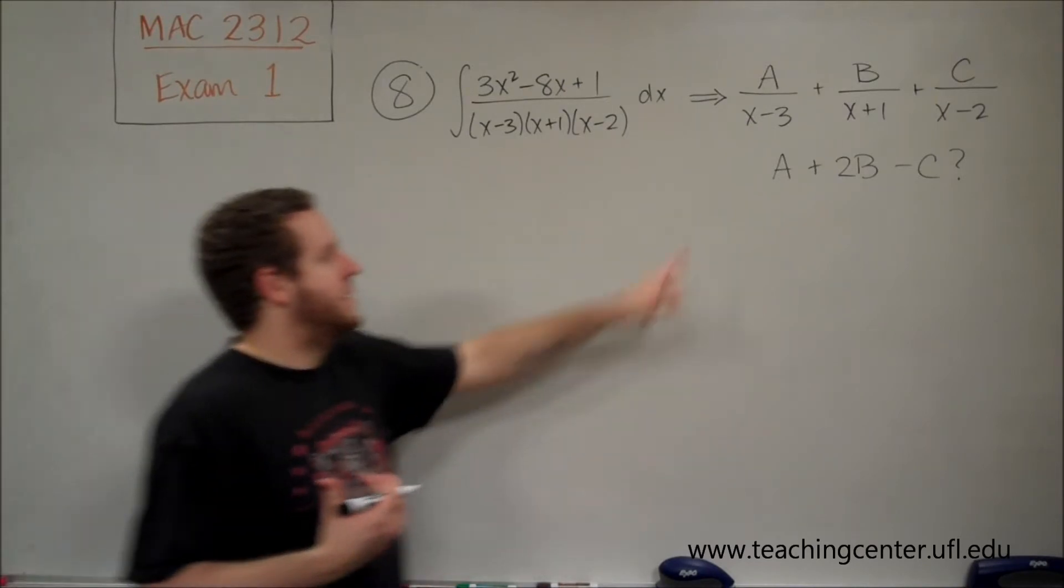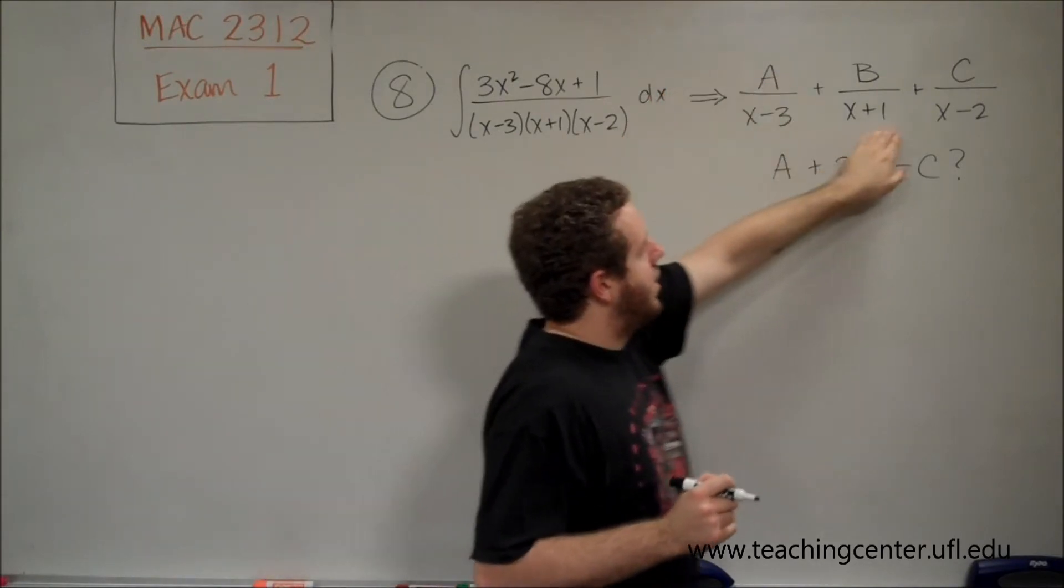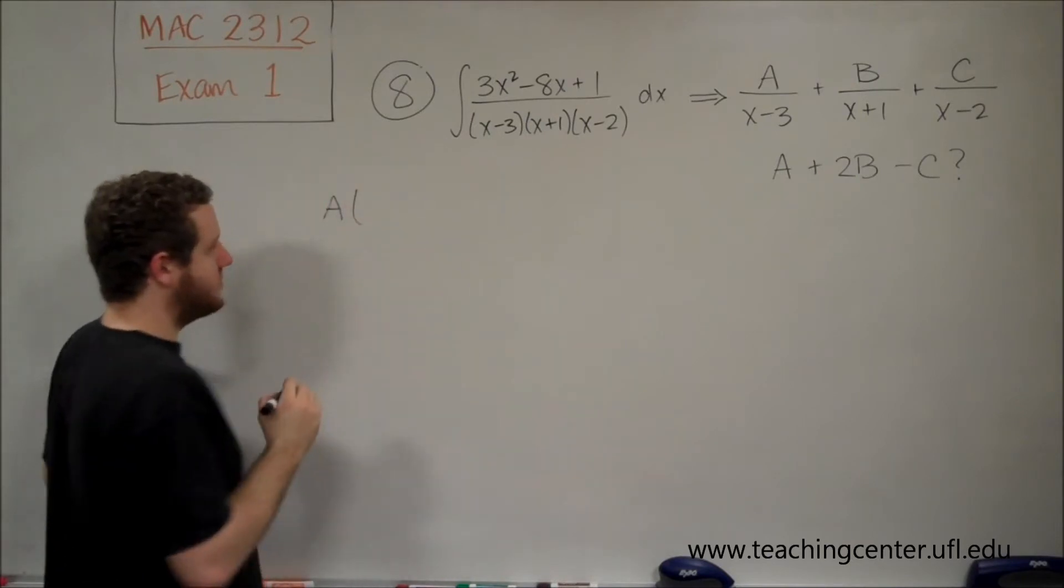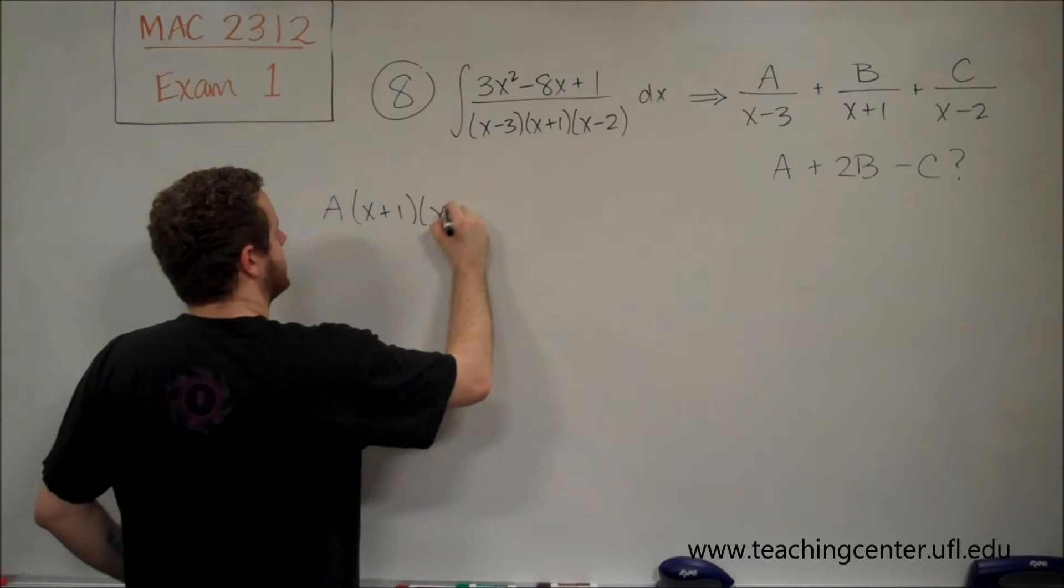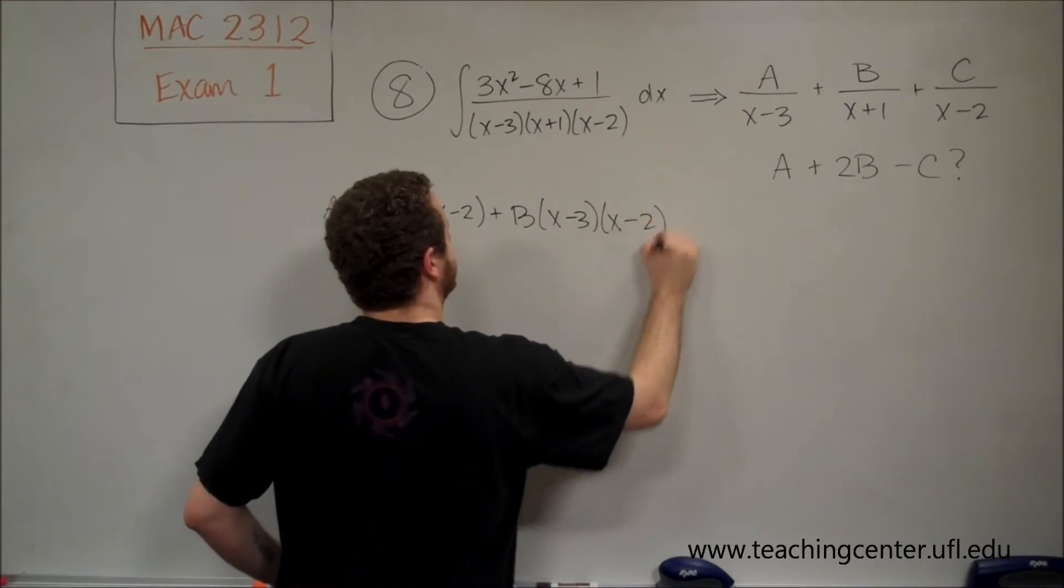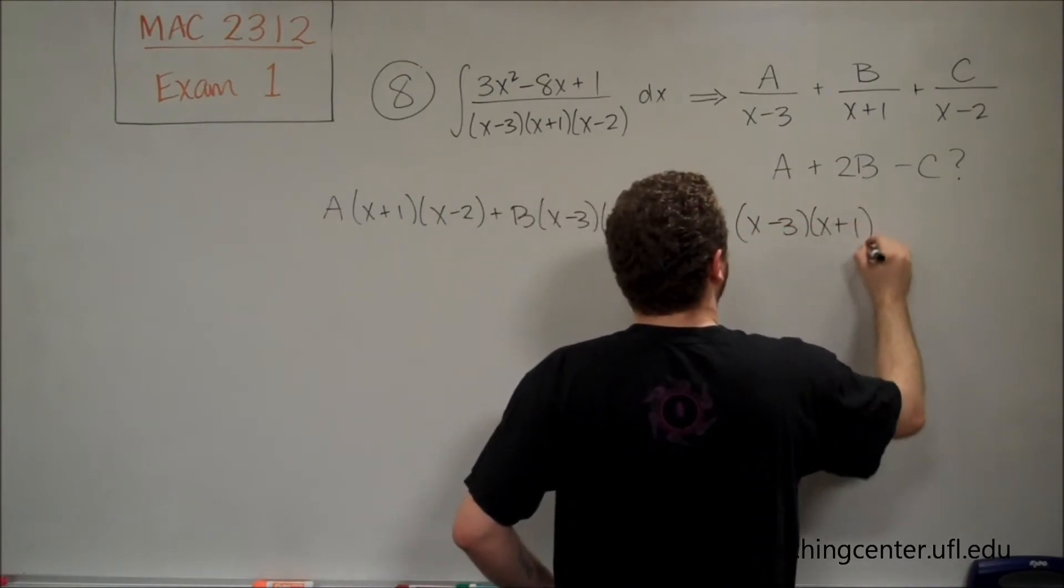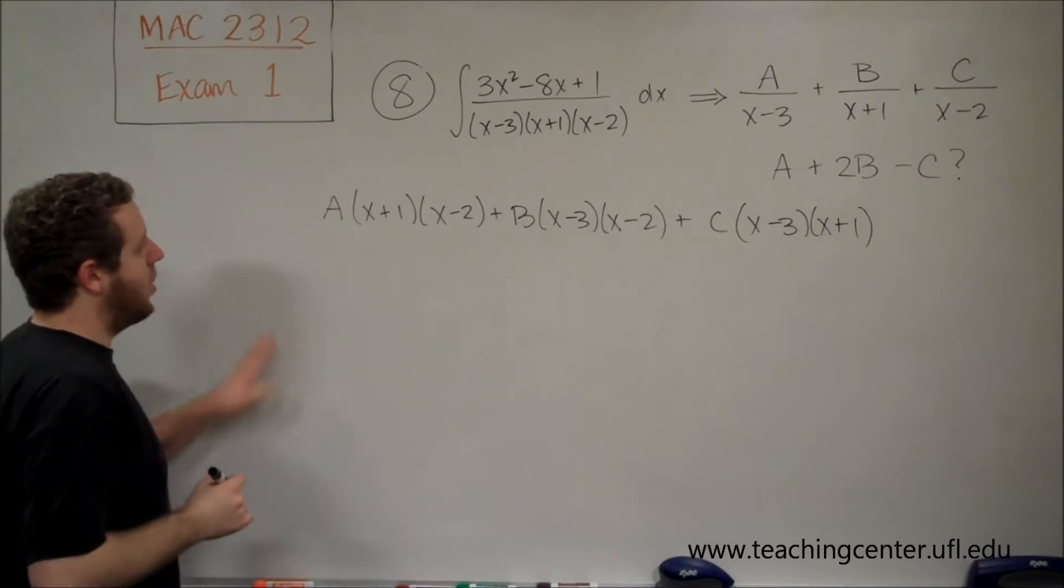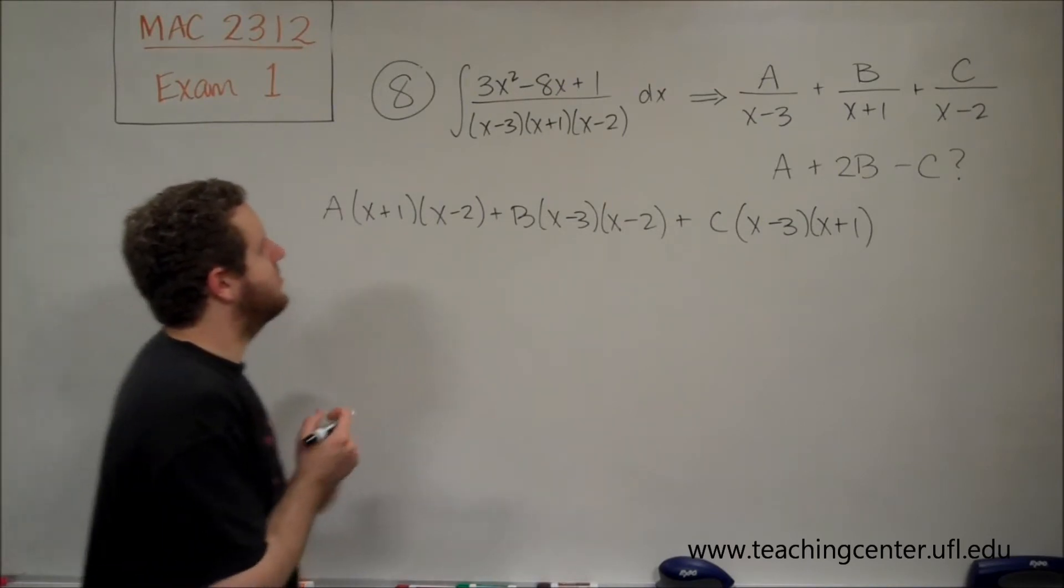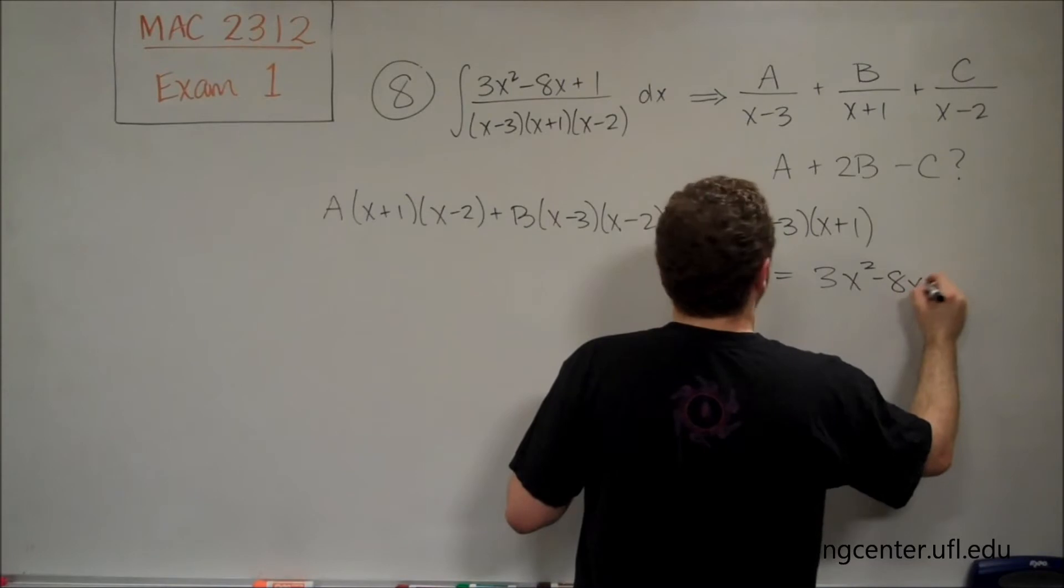So, in getting a common denominator of these three terms, what would we need to do? Well, each letter is going to have to be multiplied by the other factors that it's not already over. So, we know that we would have a times (x+1)(x-2). We would have b times (x-3)(x-2). And we would have c times (x-3)(x+1). And all of this has to equal the numerator up there. So, now, to solve for these things, let me write that over here, equals 3x² - 8x + 1.